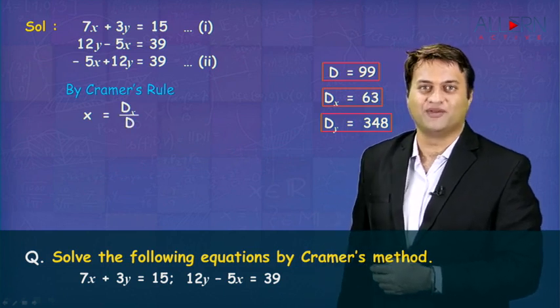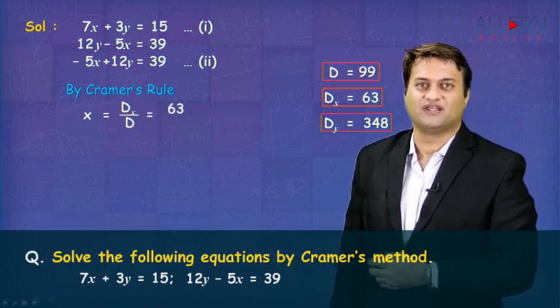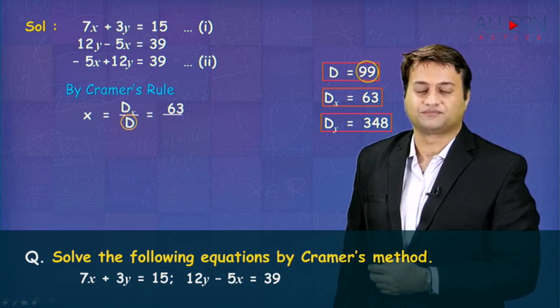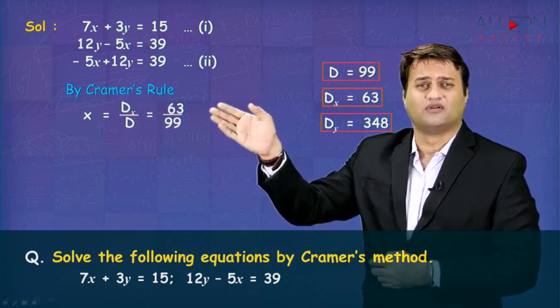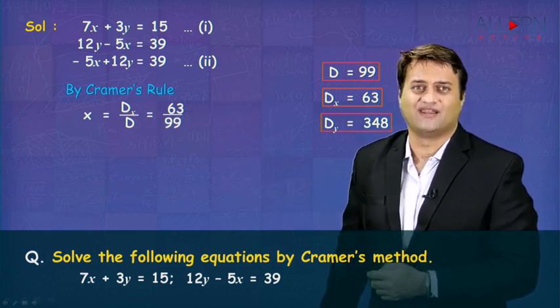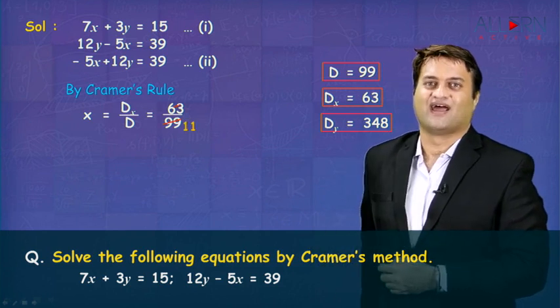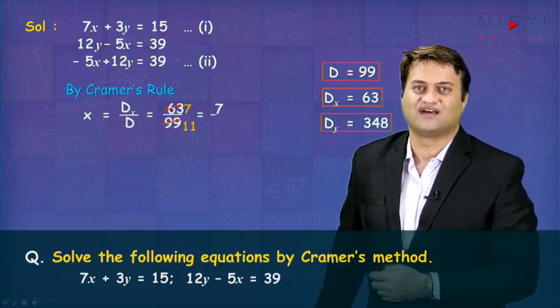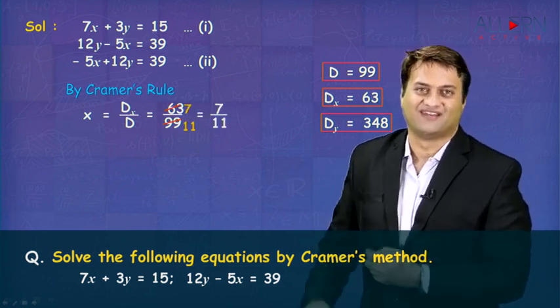X is equal to DX upon D, which is equal to 63 upon 99. Now, what is the common factor between 63 and 99? It is 9. 9 7s are, 9 11s are, you get 7 upon 11.